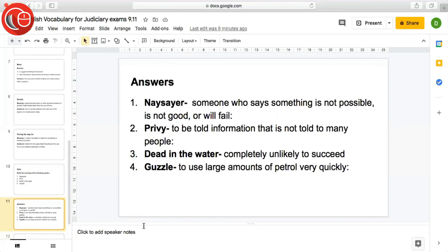All right, now time for answers. The first word is naysayer. Someone who says something is not possible, is not good or will fail. Naysayers are people with a very negative attitude, who always say that something is not possible, not good, will fail. They don't have a positive attitude towards things.